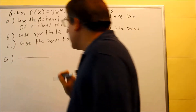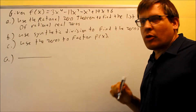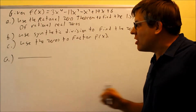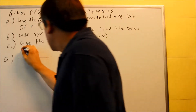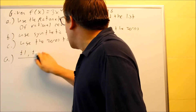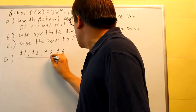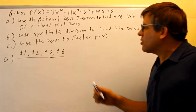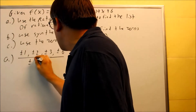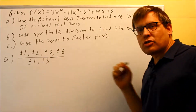I want to write the factors of the last number over factors of the first number. I want to write factors of 6 — the numbers that divide evenly into 6 — on top: plus or minus 1, plus or minus 2, plus or minus 3, and plus or minus 6. On the bottom, I'm putting factors of 3: plus or minus 1 and plus or minus 3.